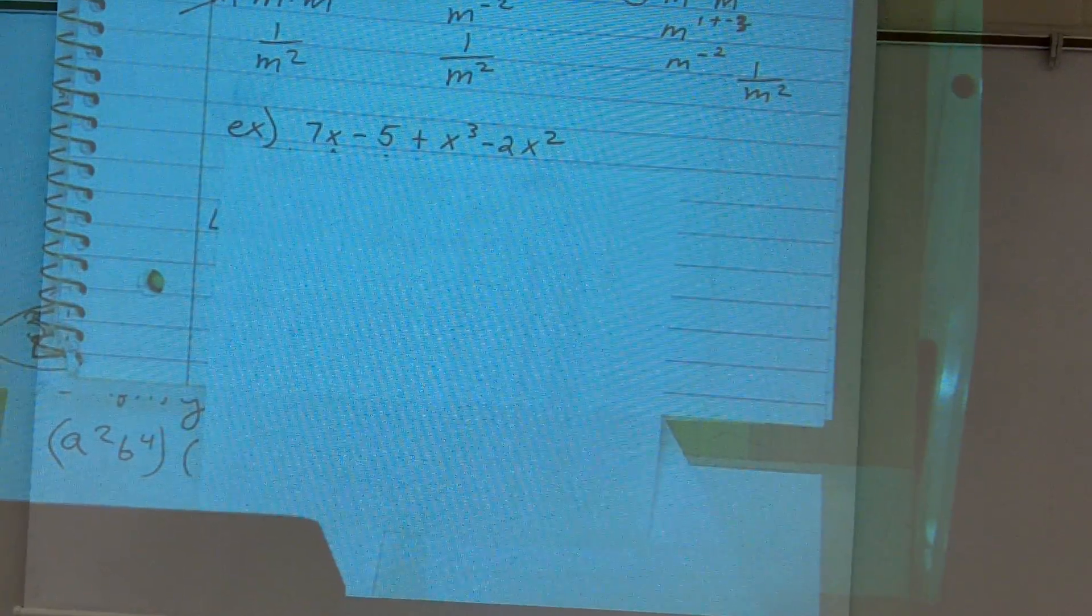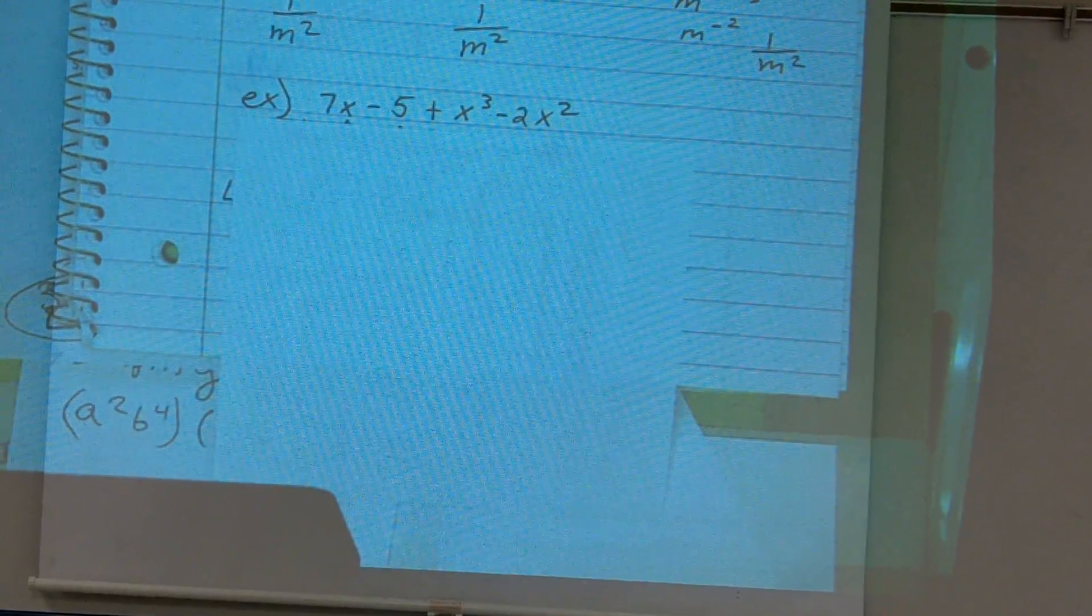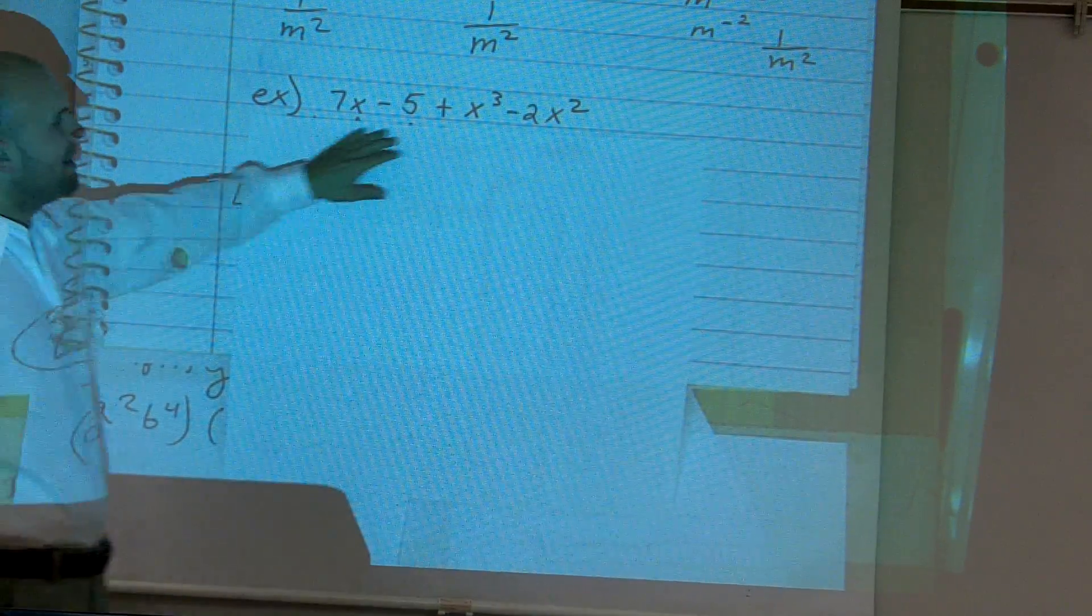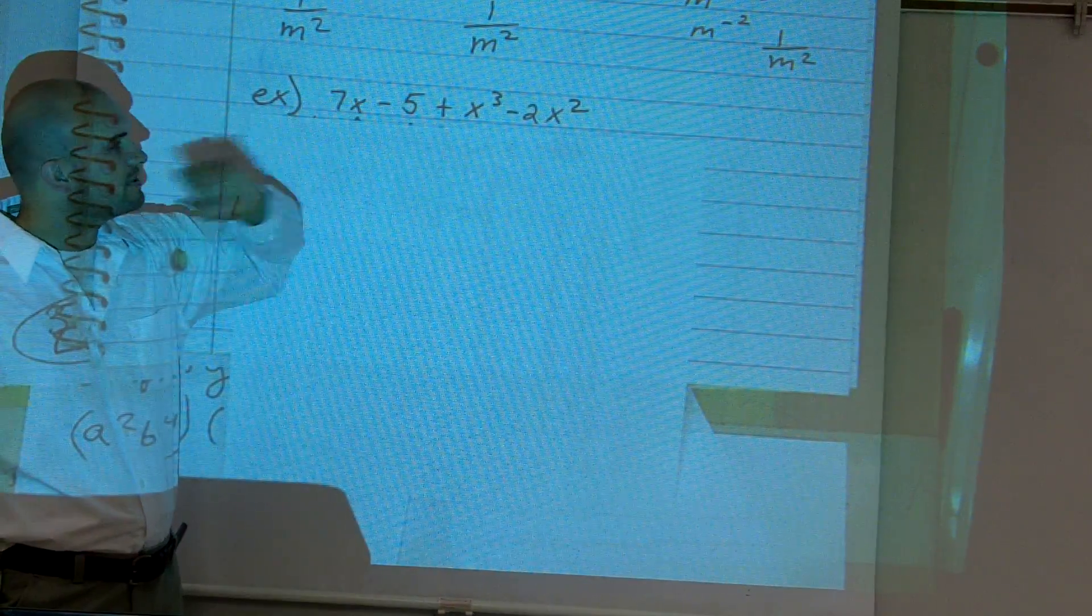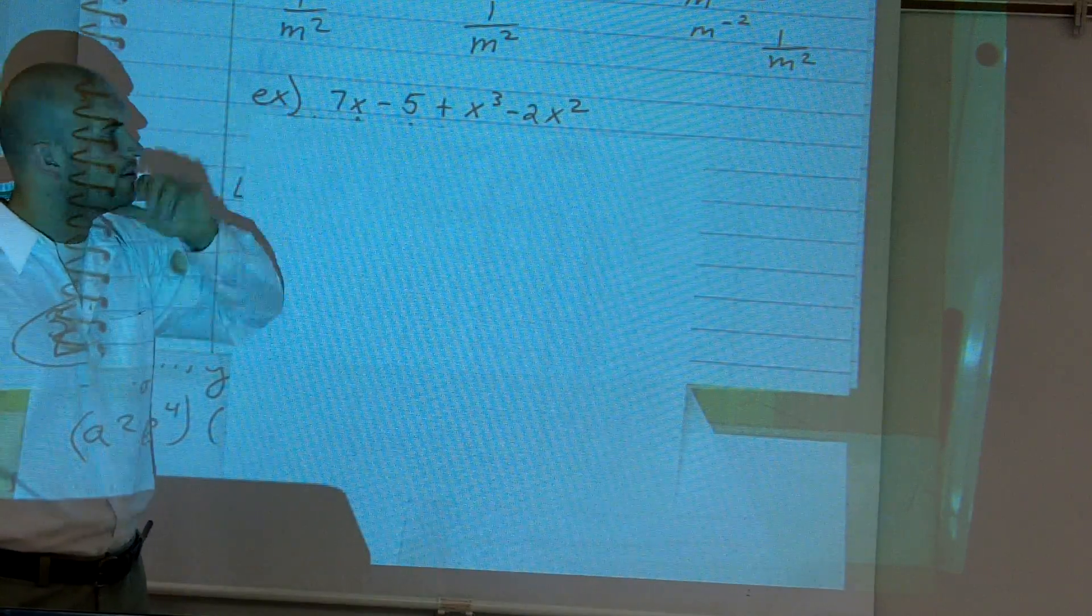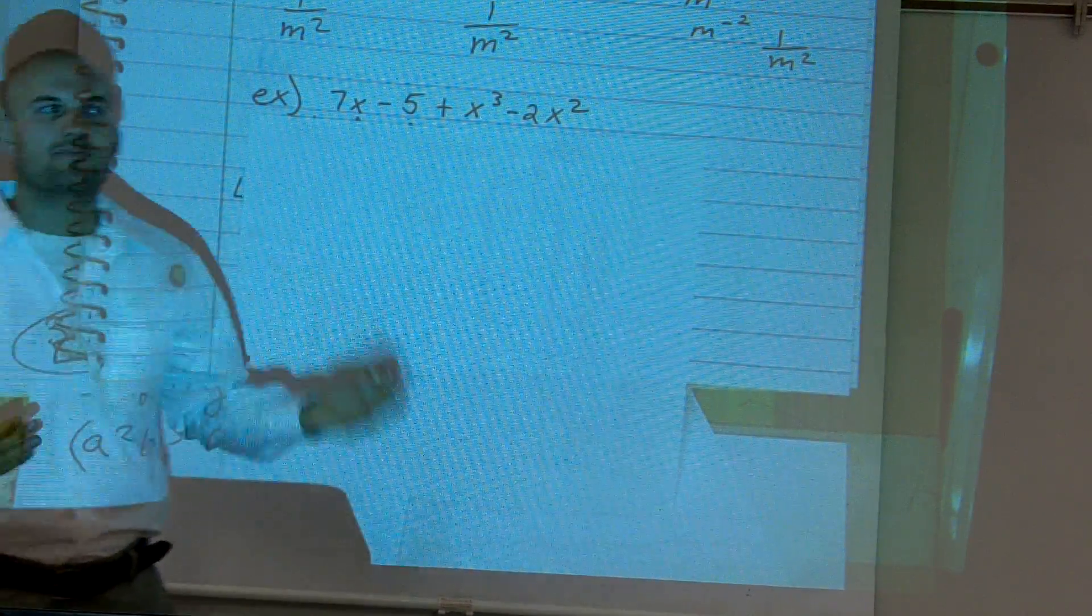All right. If you guys remember, we need to find the standard form, the leading coefficient, and the degree of the given polynomial. So the first thing we need to do is put it in standard form.